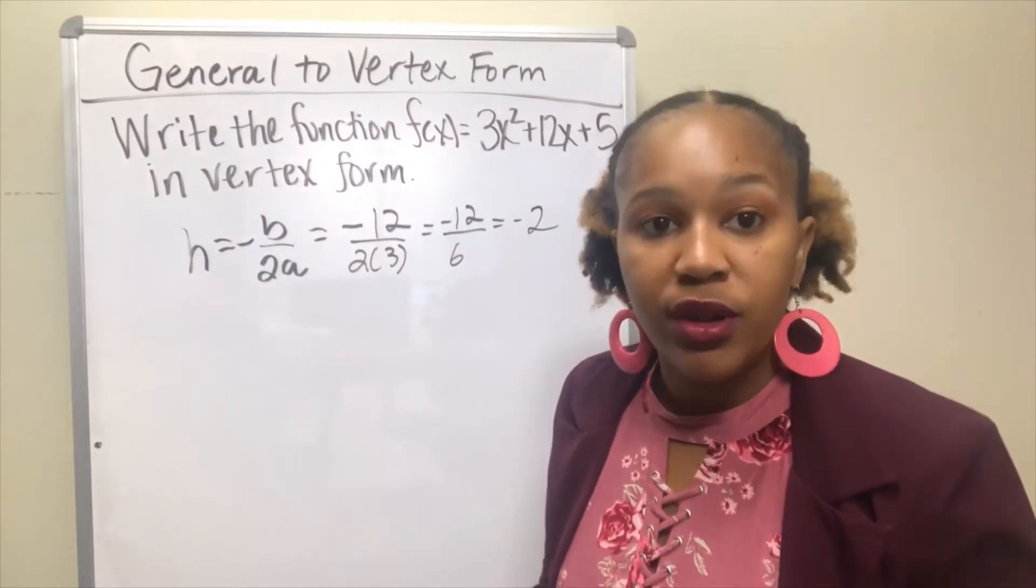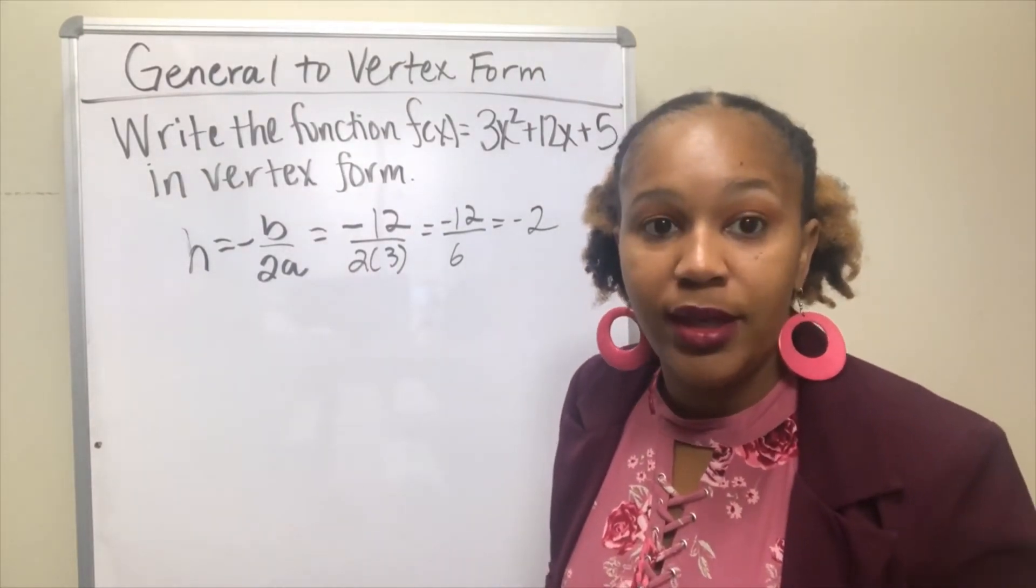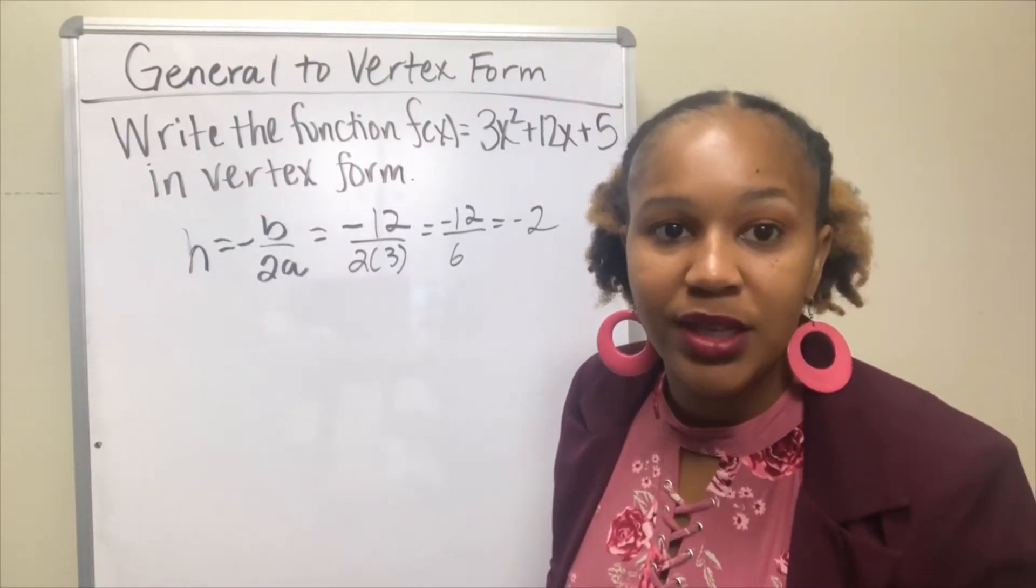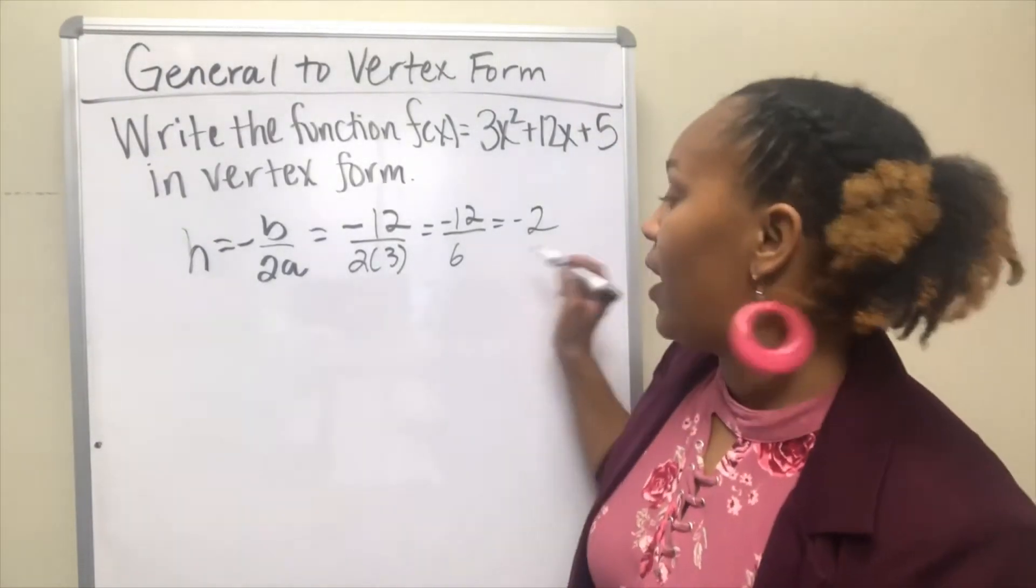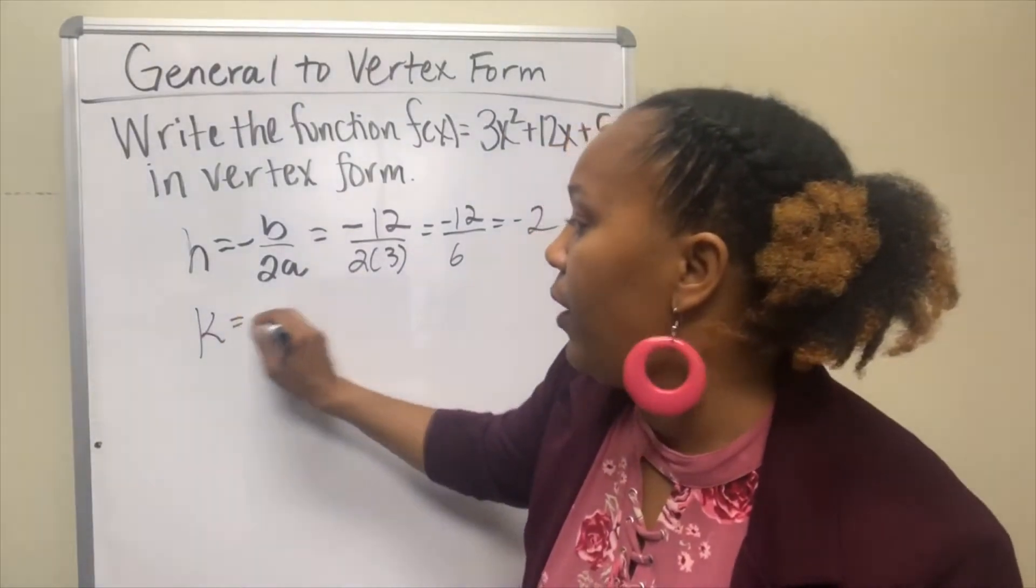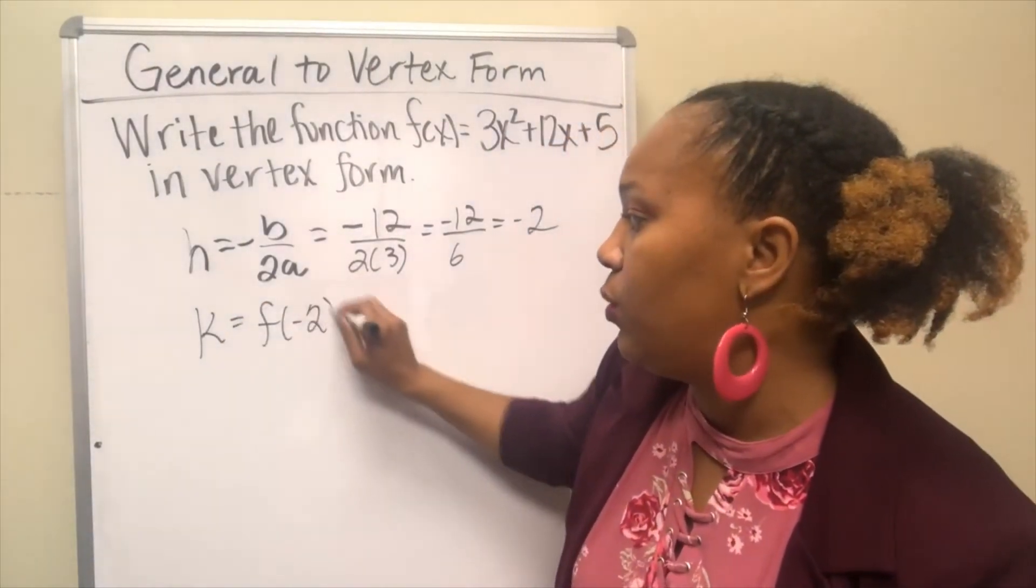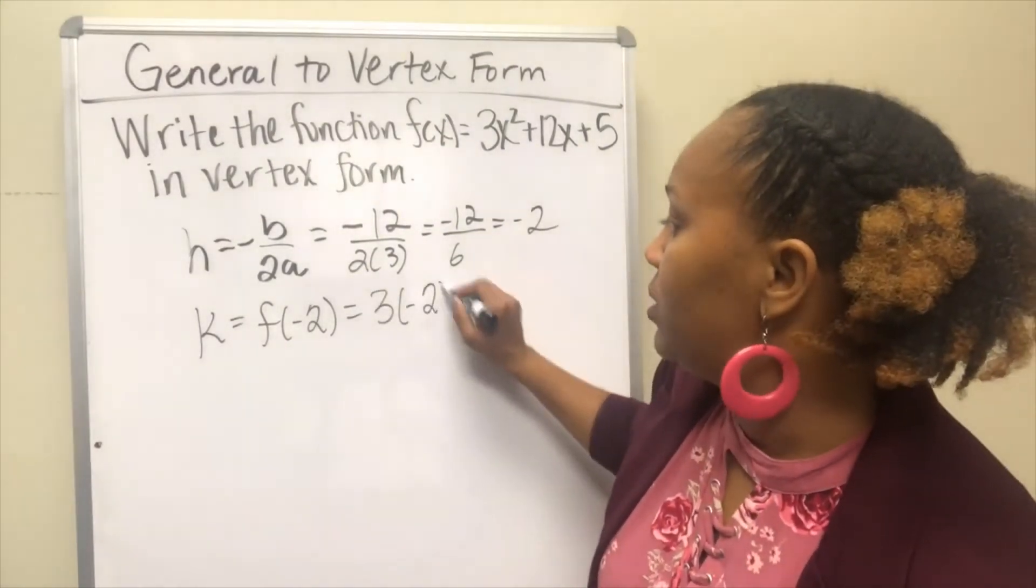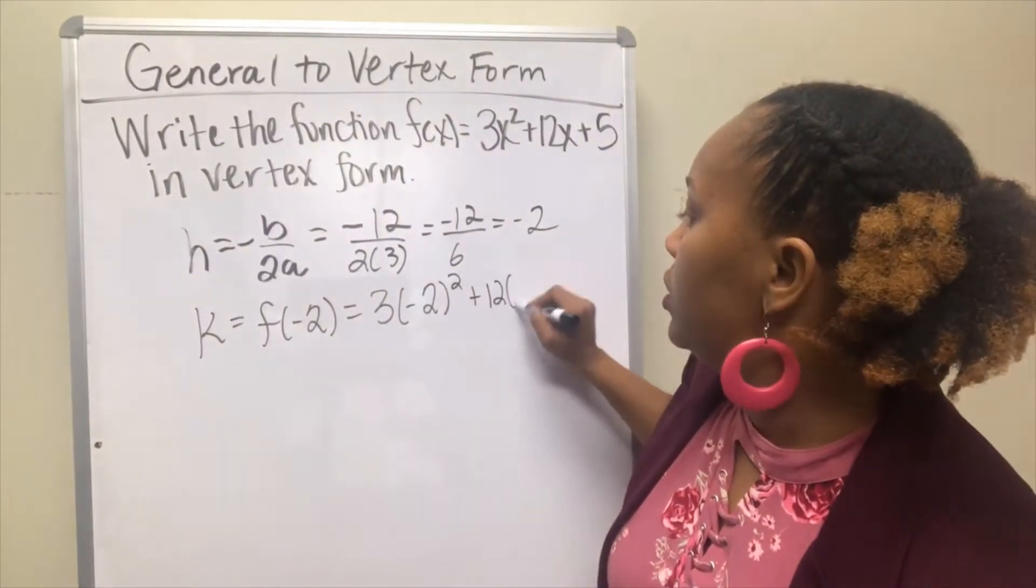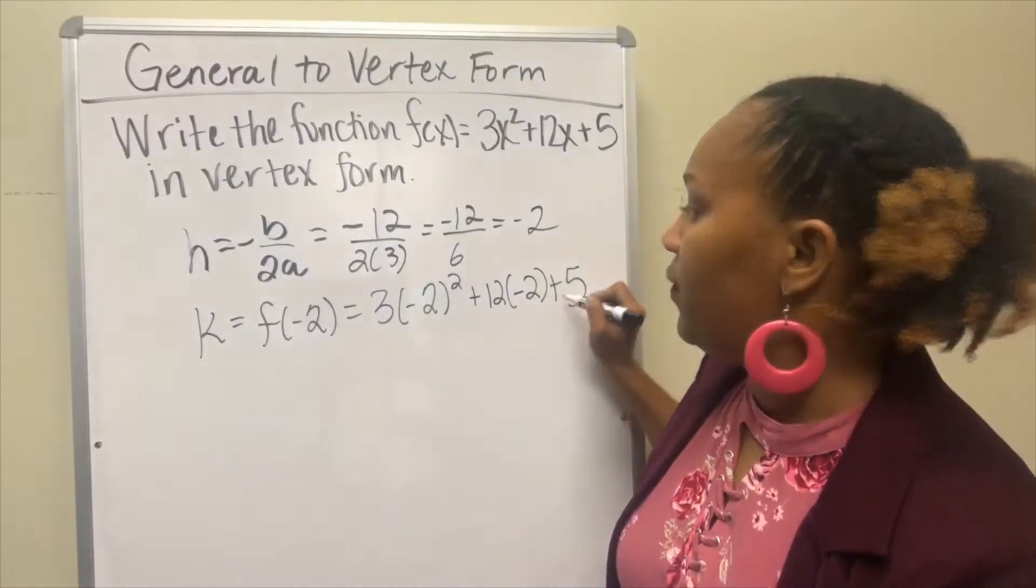And recall from the previous video, if you watched it, that h is the x value of the vertex and k is the y value of the vertex. So now if I want to find k, I'll take what I got for h and plug it into the original function. So my original function is 3x², so I'll do 3 times negative 2 squared plus 12 times negative 2 plus 5.